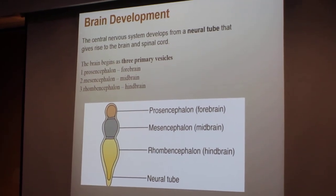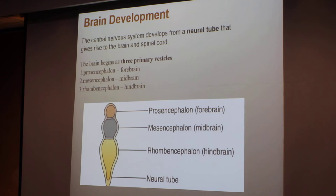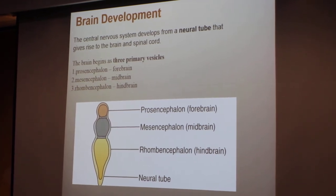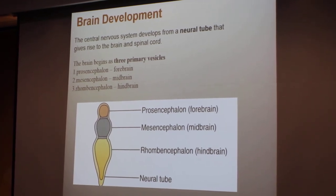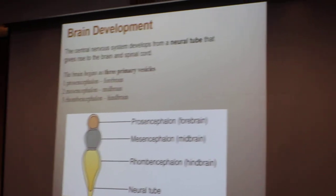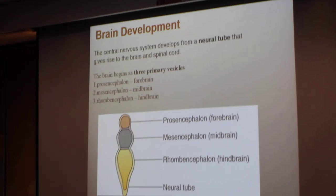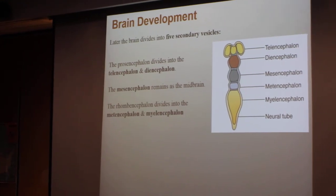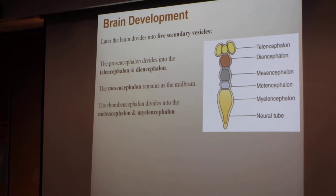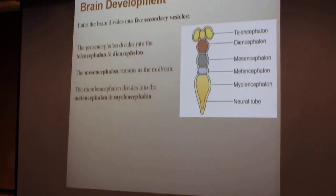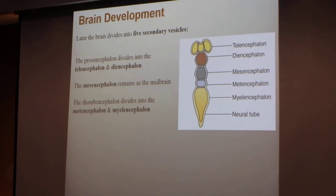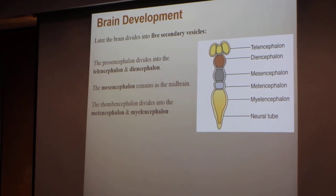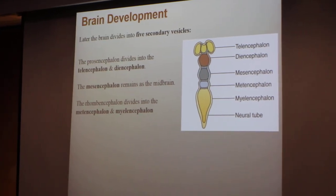As you see in the diagram here, these three vesicles later in the embryo's life give five. The first one, the prosencephalon, gives the telencephalon and diencephalon. The middle one, the mesencephalon, stays the same.